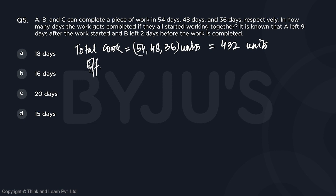If you talk about efficiency of A, it's going to be 432 units divided by the number of days it worked, so 54 days. So this is going to give us 8 units per day.